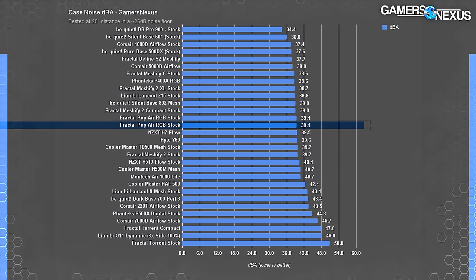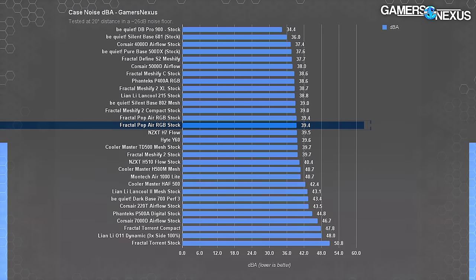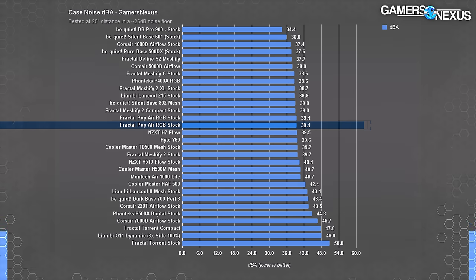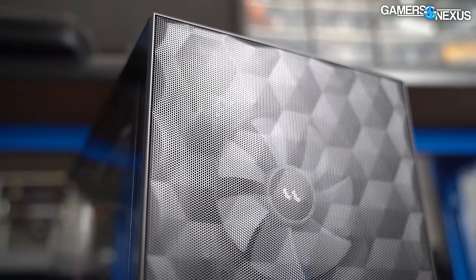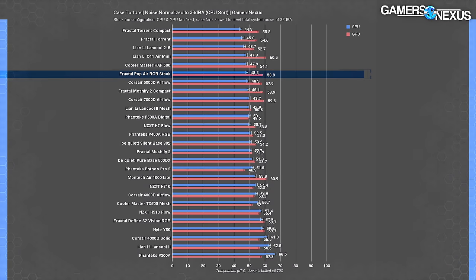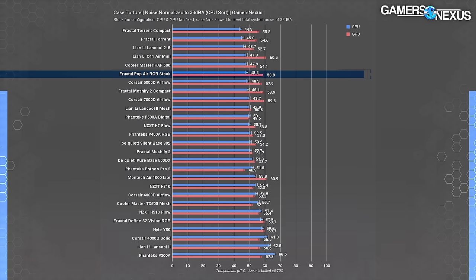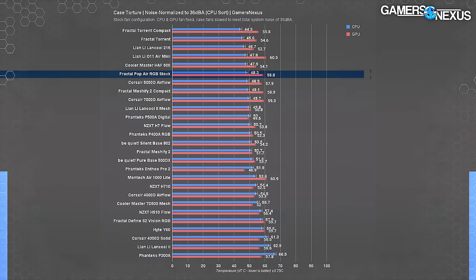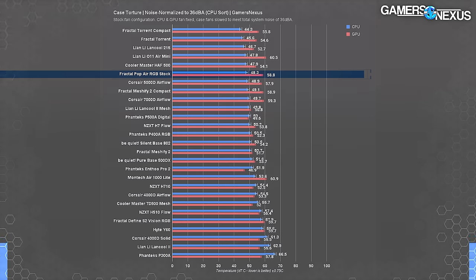With three stock fans at 100%, the Pop Air's noise level was 39.4 dBA — on par with the H7 Flow. The stock fans ran a little faster than the advertised 1200 RPM, typically between 1300 and 1400 RPM, but that's within normal 10% manufacturing variance. Fractal is releasing silent versions of the Pop cases. Lowering noise to 36 dBA required setting fan speeds to about 80%, or roughly 1100 RPM. At that setting CPU temperature climbed to 48 degrees — still ahead of the H7 Flow's 50-degree average. GPU average climbed to an unpleasant 59 degrees, handily beaten by the H7 Flow's 54 degrees, so keep a careful eye on GPU temperature when tuning fan speeds.